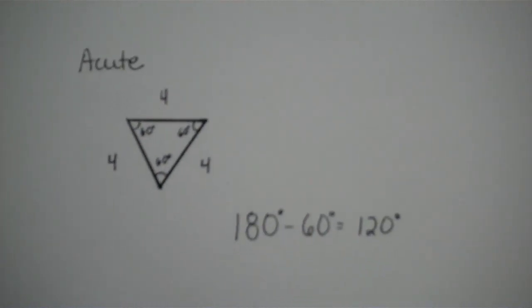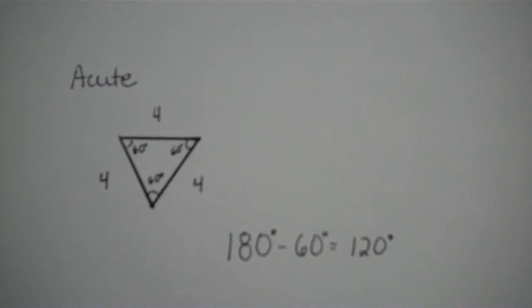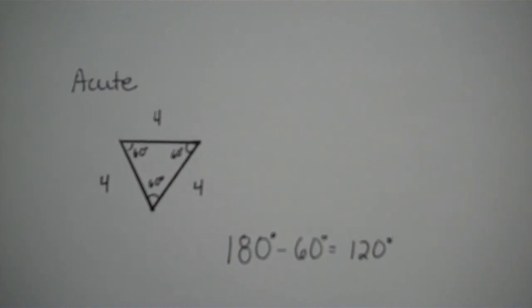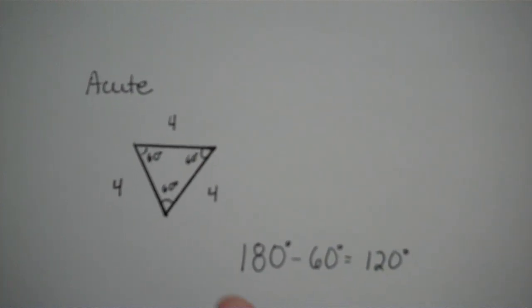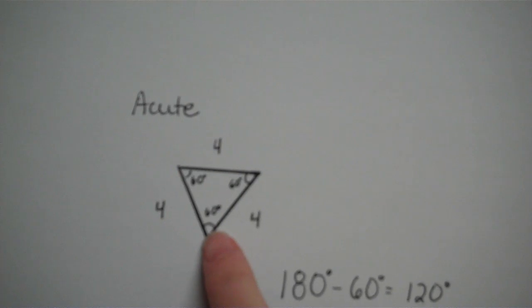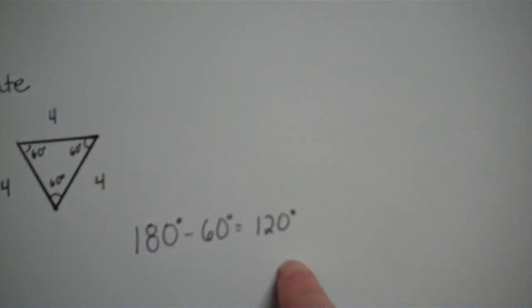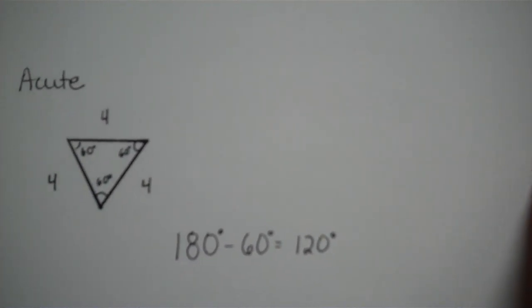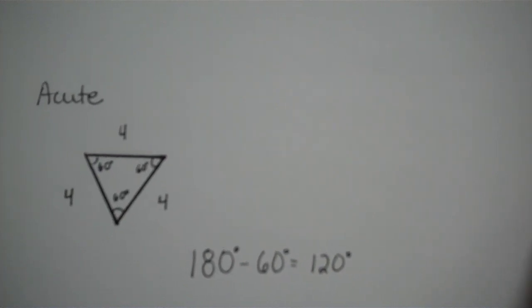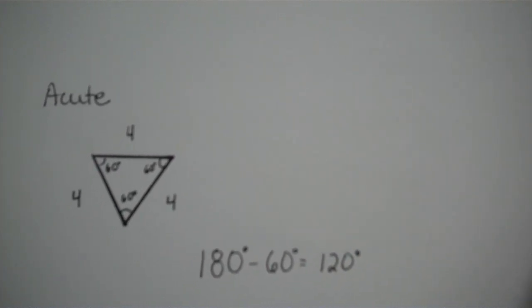Now let's take a look at the acute triangle. The definition for an acute triangle is that all angles are less than 90 degrees. If one of our angles measures 60 degrees, that leaves us with 120 for the other two. In this triangle, the other two angles are 60 degrees as well.